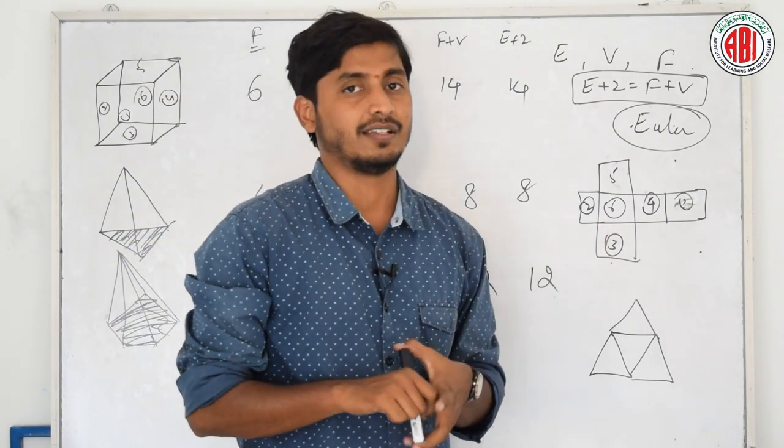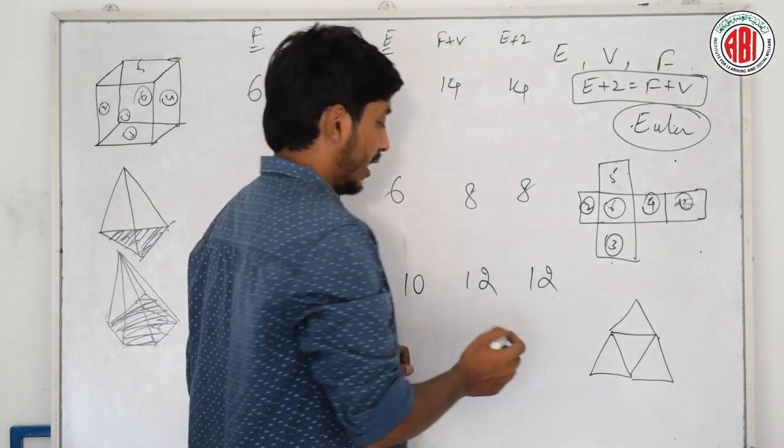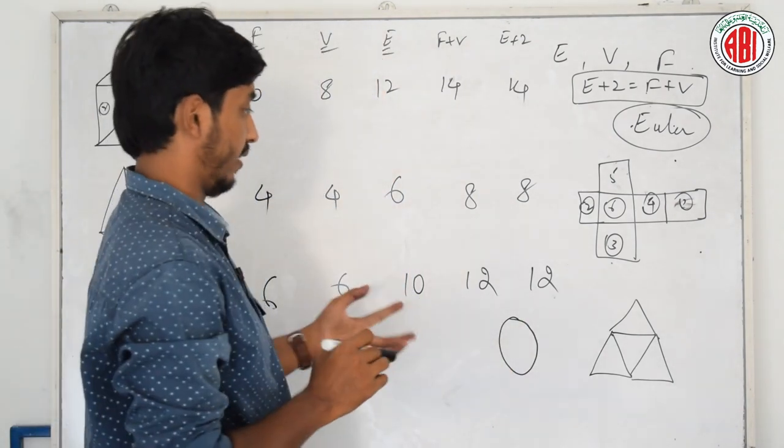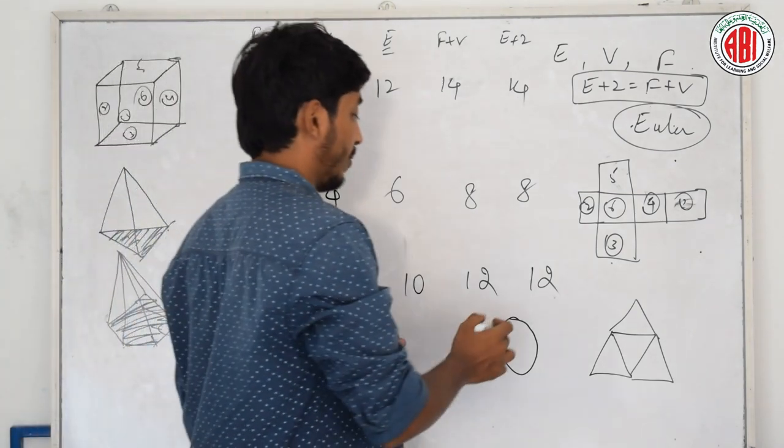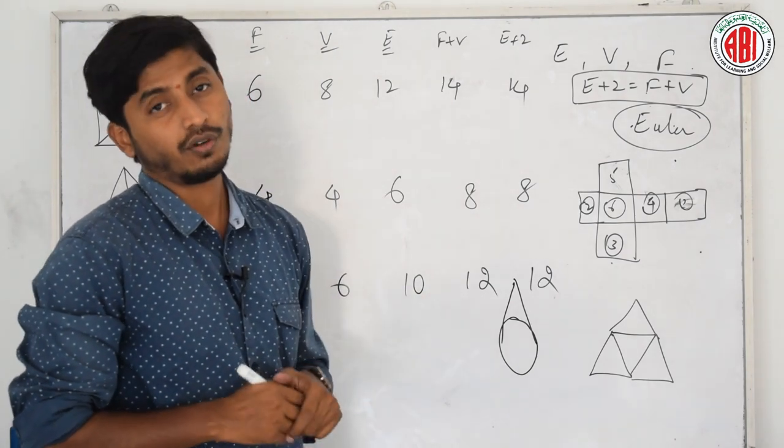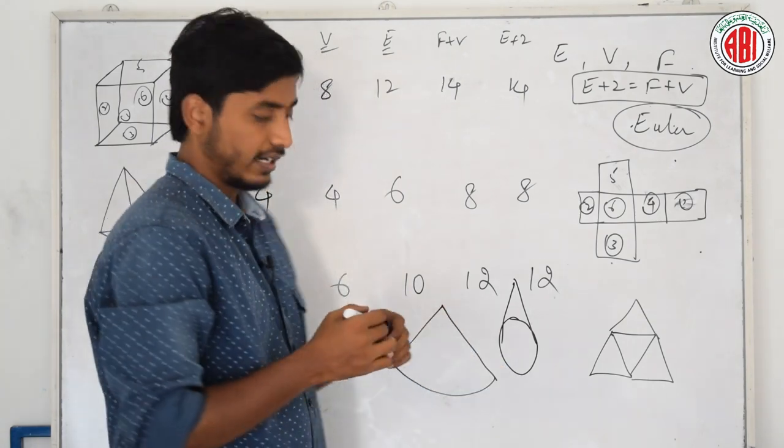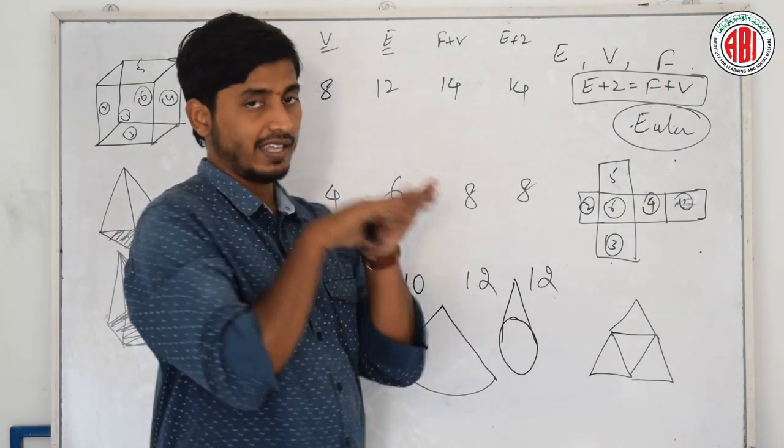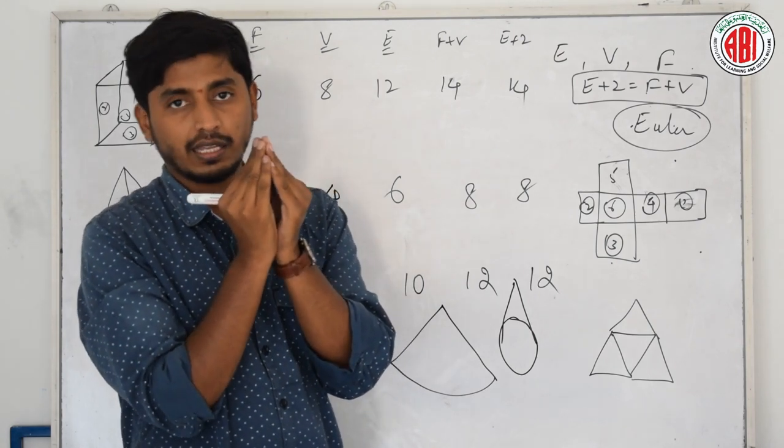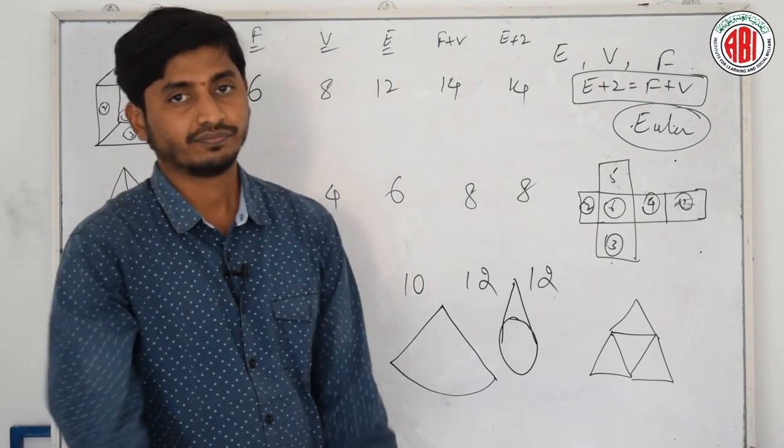And finally, we have learnt this surface or how do we cut a paper. This is simply called as developed surface. Or else if it is a circle pyramid, that is nothing but a cone. How do we do? If I fold this, if I join those both, I will get a cone. If I join, I will get a perfect cone.